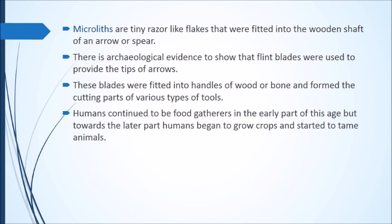Humans continued to be food gatherers in the early part of the Mesolithic age. But towards the later part, humans began to grow crops and started to domesticate animals. During the early Mesolithic period they only gathered food and did not know how to grow crops, but by the later part they started growing crops and keeping domestic animals.